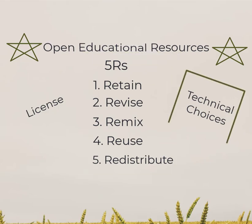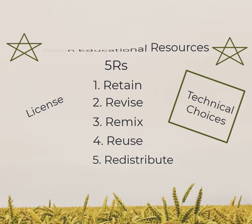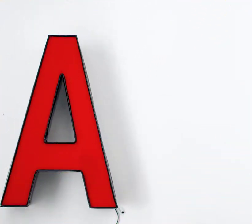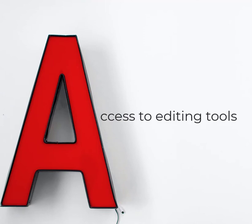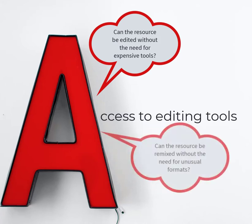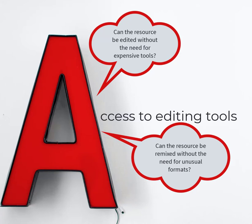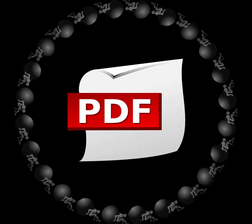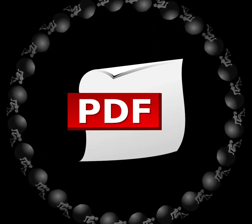This video will explore how technical choices impact the ability to engage in the 5R activities by using the ALMS framework as a guide. The A in ALMS stands for Access to Editing Tools. Some questions to ask include: can the resource be edited without the need to buy expensive tools? Can the resource be revised or remixed without the need for unusual or obsolete formats? A common format dilemma in OER are PDF files, which are great for reading but require expensive software for editing.